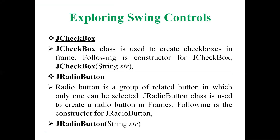Referencing the J checkbox, the J checkbox class is used to create checkboxes in a frame. The checkbox is for selection of multiple items from the interface. The radio button allows only one option to be selected by the user. You can also create a group of radio buttons rather than individual ones, and from that particular group of radio buttons, you have to choose only one option.